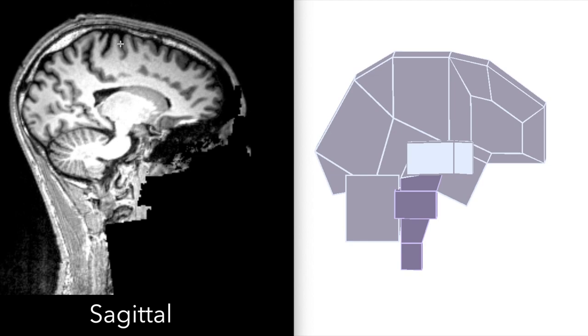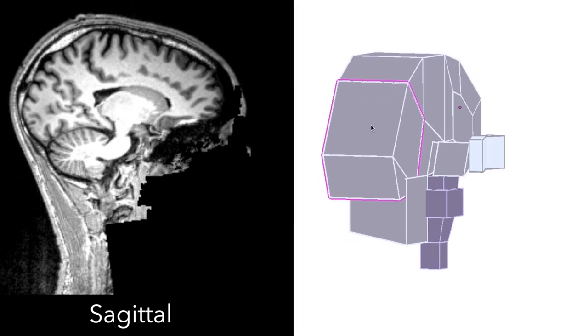The cortex is divided into lobes which we'll just go through briefly: the frontal, parietal, occipital, and temporal lobes.